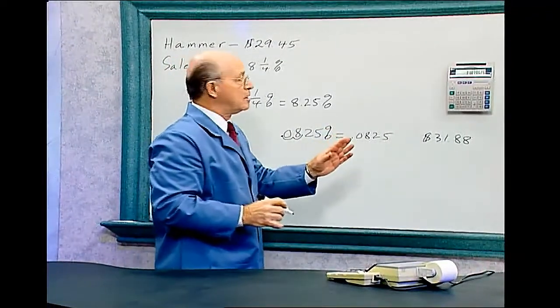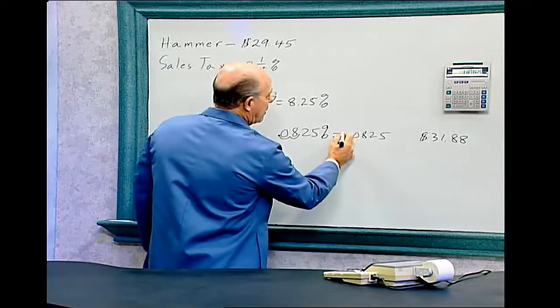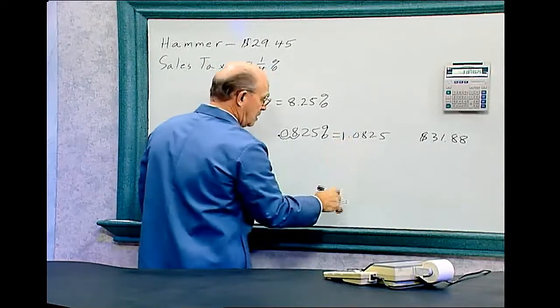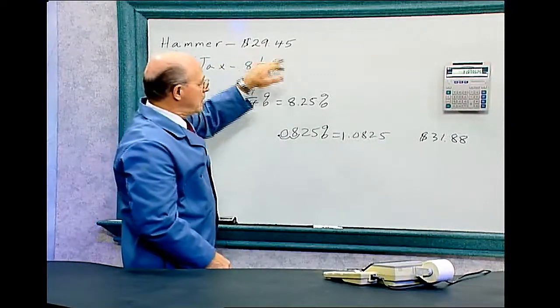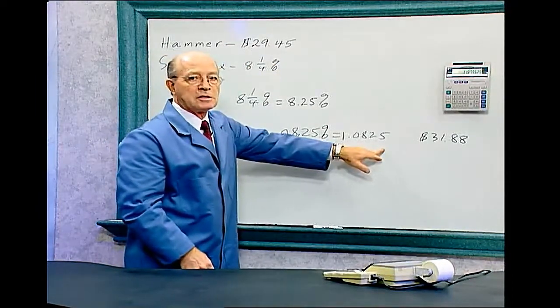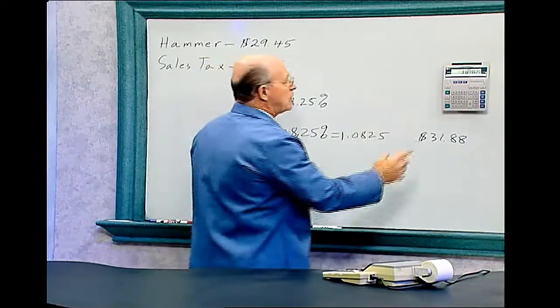Now a fast way of doing that is put a one in front of that. By putting a one and multiplying by one, that's going to give you this number. And this will add the sales tax. Now let's do that on this calculator.